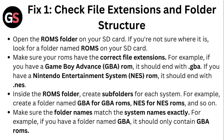Fix one: Check file extensions and folder structure. Open the ROMs folder on your SD card. If you are not sure where it is, look for a folder named ROMs on your SD card. Make sure your ROMs have correct file extensions. For example, if you have a Game Boy Advance ROM, it should end with .gba. If you have a Nintendo Entertainment System ROM, it should end with .nes. Inside the ROMs folder, create subfolders for each system — for example, create a folder named GBA for .gba ROMs, NES for .nes ROMs, and so on.